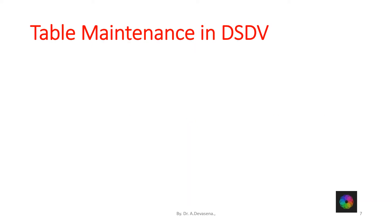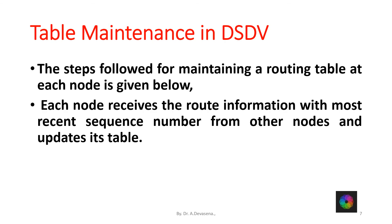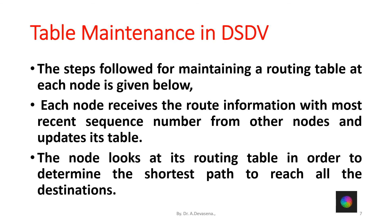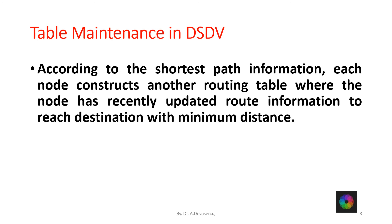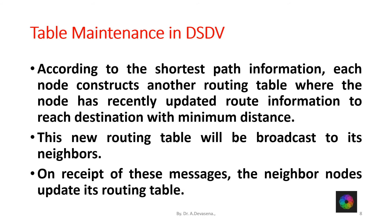Routing table maintenance in DSDV: The steps followed for maintaining a routing table at each node are given below. Each node receives the route information with the most recent sequence number from other nodes and updates its table. The node looks at its routing table in order to determine the shortest path to reach all the destinations. According to the shortest path information, each node constructs another routing table where the node has recently updated route information to reach the destination with minimum distance. This new routing table will be broadcast to its neighbors, and on receipt of these messages, the neighbor nodes update their routing tables.